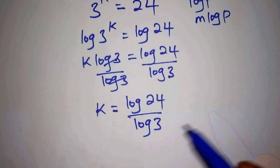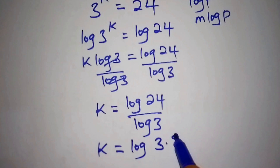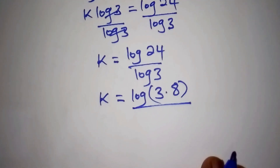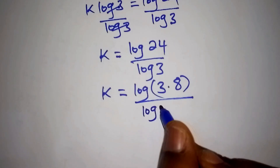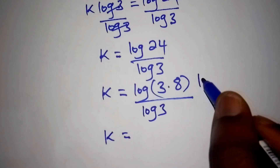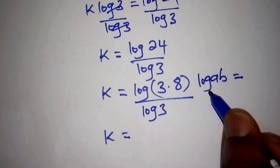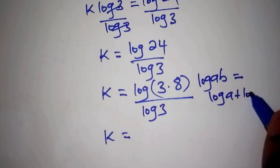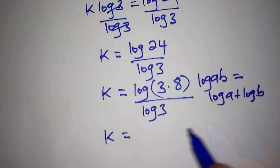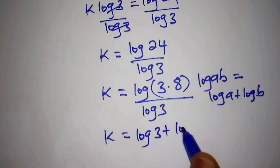We need to factorize further by writing k equals log of 3 multiplied by 8, all over log of 3. Using the rule that log of a multiplied by b equals log a plus log b, we expand this to log of 3 plus log of 8, all divided by log of 3.